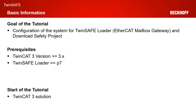The goal of today's tutorial is to show you how you can configure your system for the use of the TwinSAFE Loader via EtherCAT Mailbox Gateway, and how you can download a safety project. As prerequisites, you only need a TwinCAT 3 version and a TwinSAFE Loader version P7, which is the current release on our webpage.